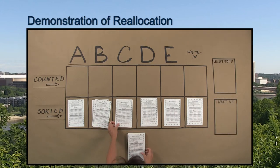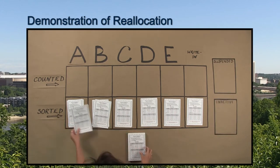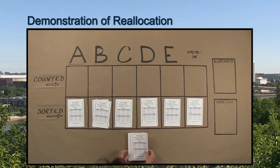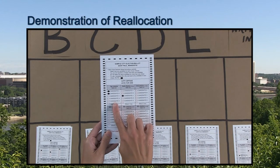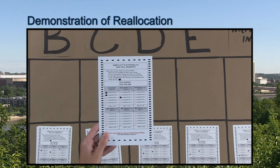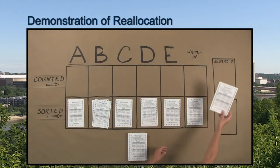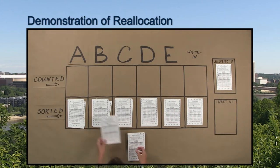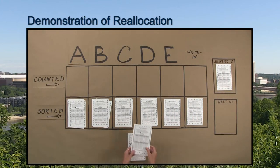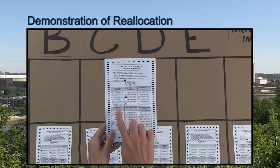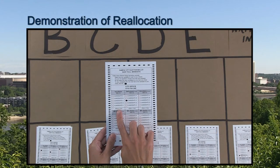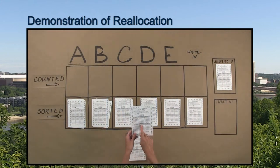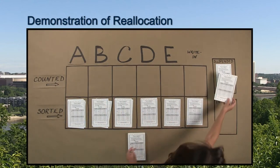A ballot is suspended when the voter's first-choice vote cannot be determined. For example, this voter selected more than one candidate as the first choice, and therefore the ballot is suspended until the first reallocation. On this ballot, the voter did not mark a first choice, so the ballot cannot be placed into a first-choice pile. It will be suspended until the first reallocation.